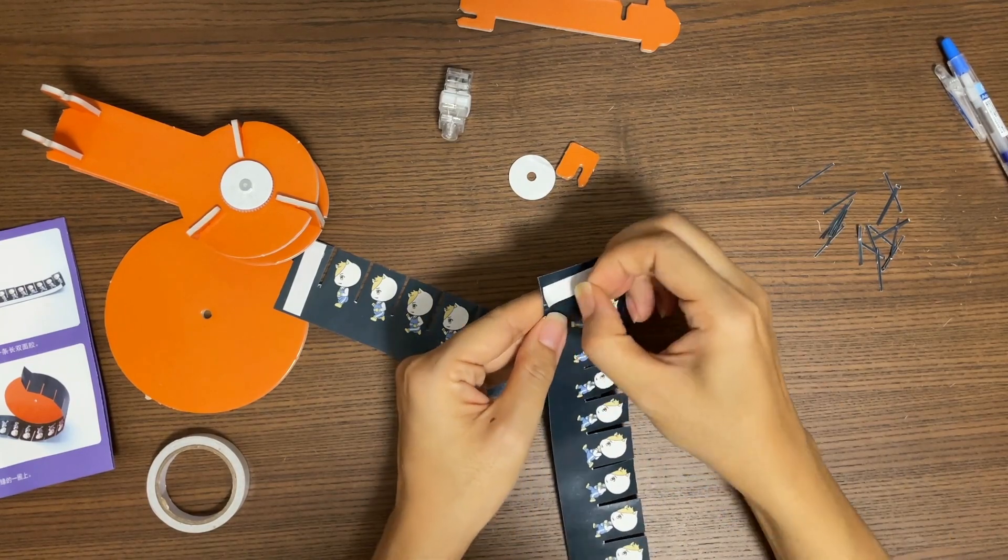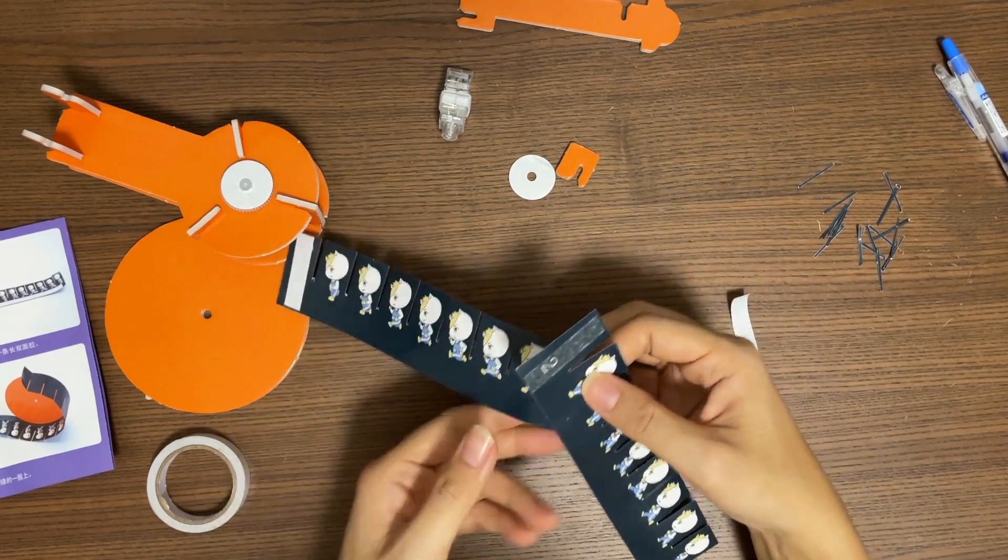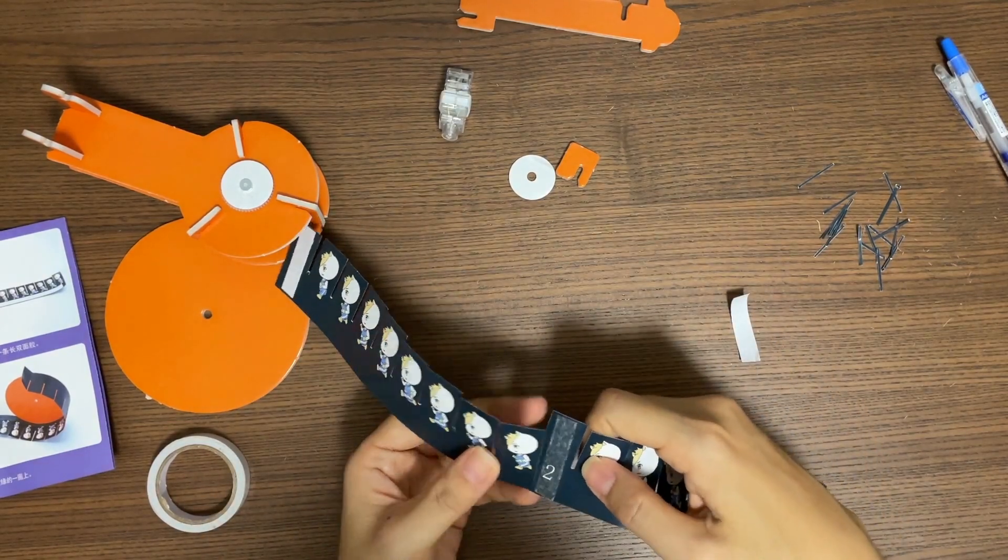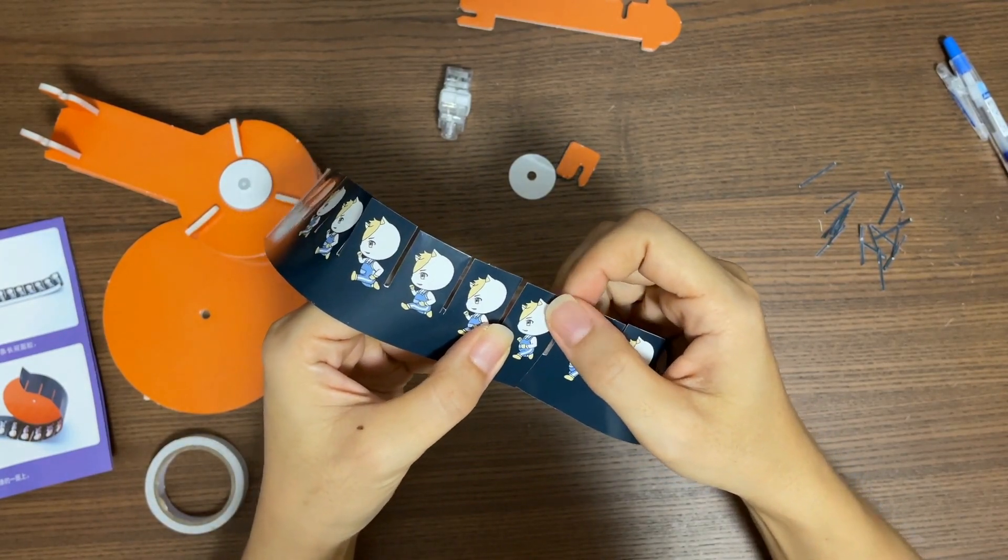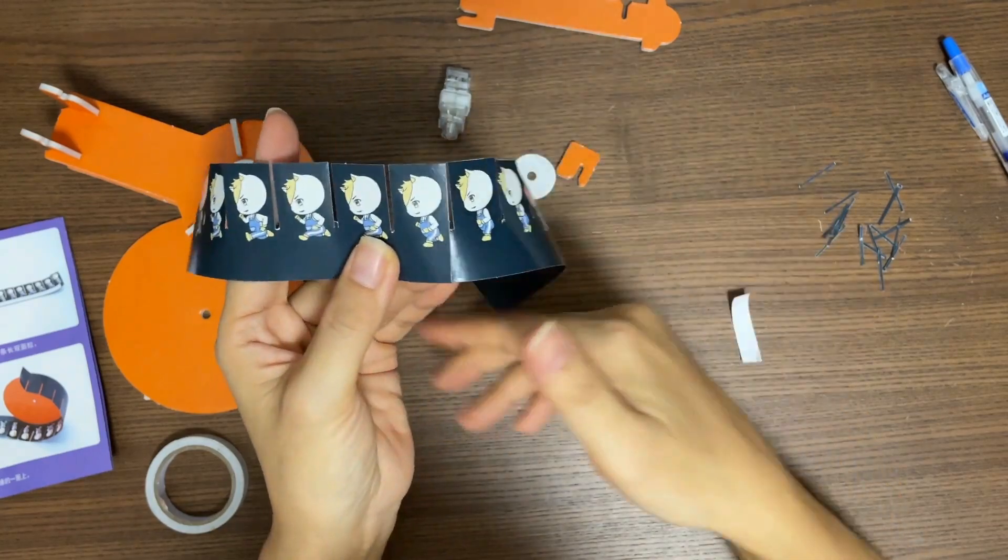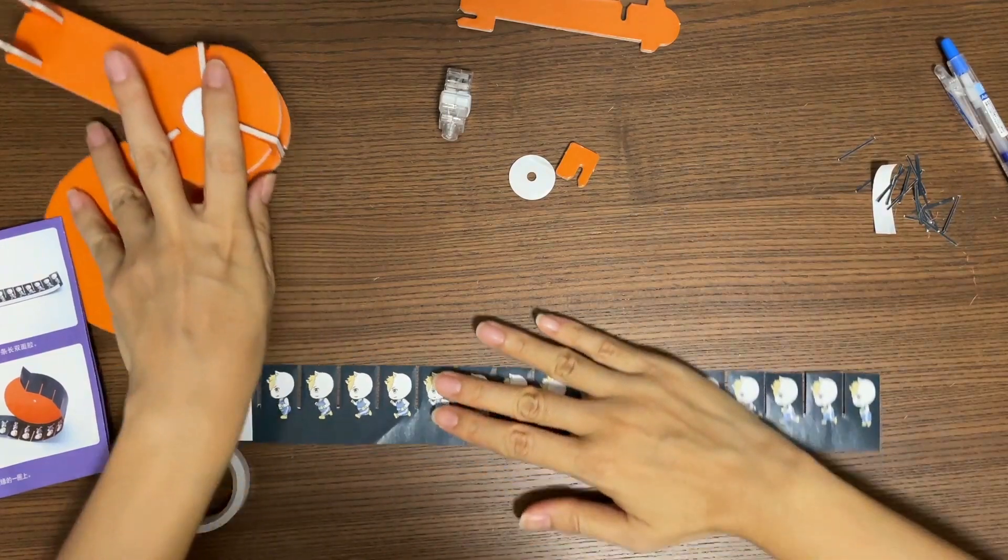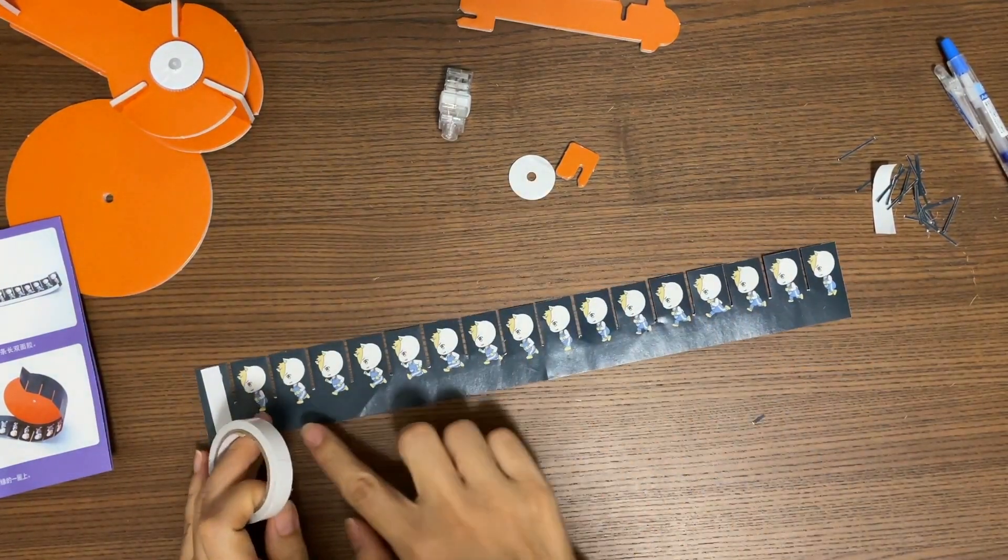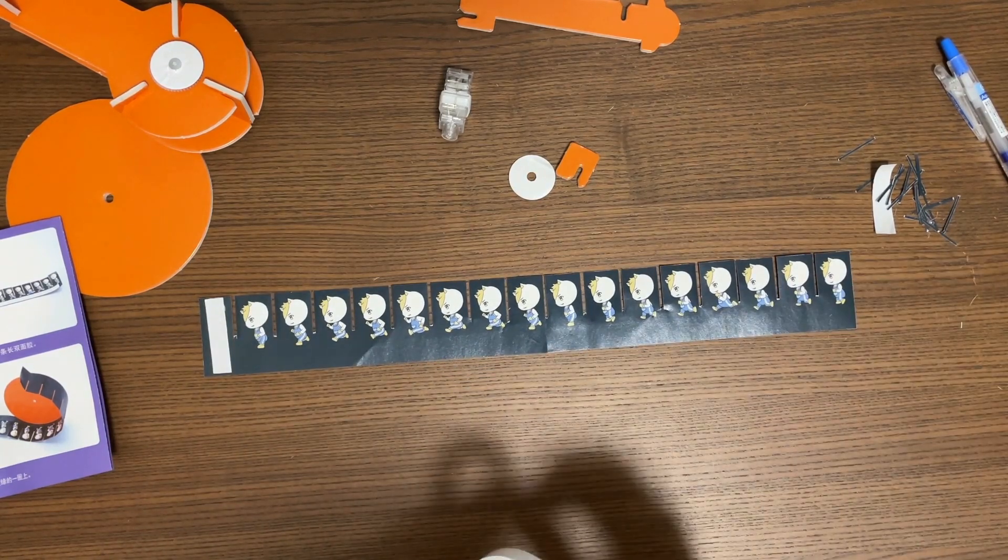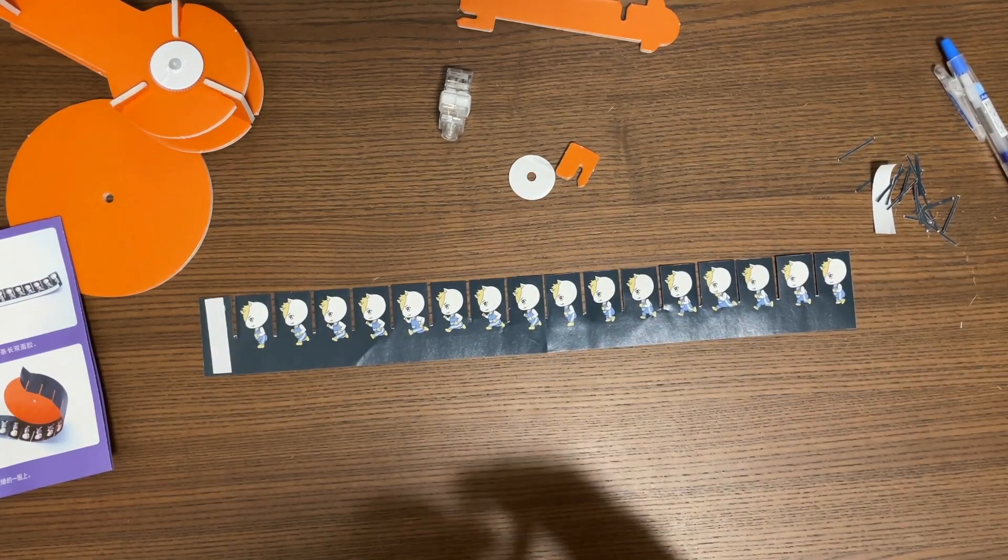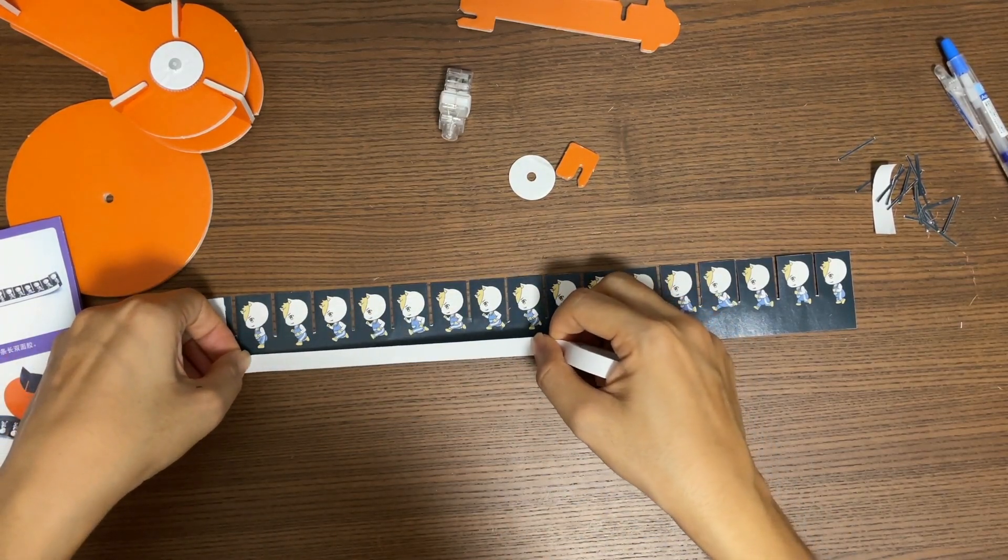Take one piece of paper. Remove the top layer from the double-sided tape and paste these two pieces of paper together this way. Now take the double-sided tape again and paste it at the bottom of the paper. Make sure that the pictures are facing upwards.